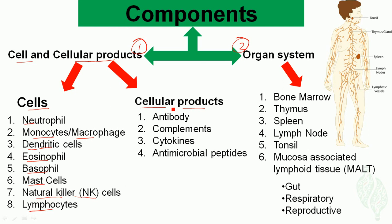In the cellular products, we have the antibodies produced from the B cells, the complement system — which has many proteins produced by the liver — cytokines produced from T cells, and antimicrobial peptides mainly produced by epithelial cells.